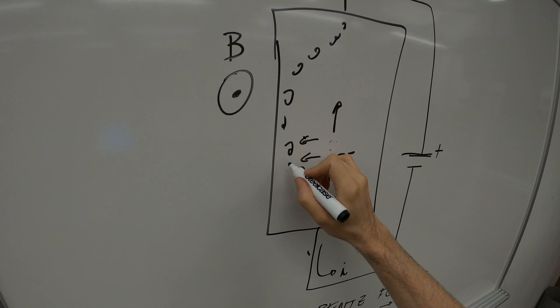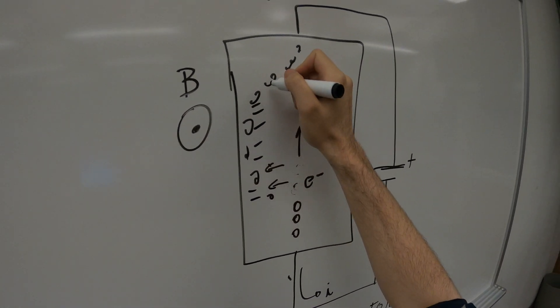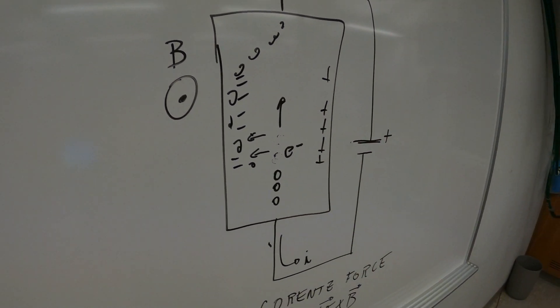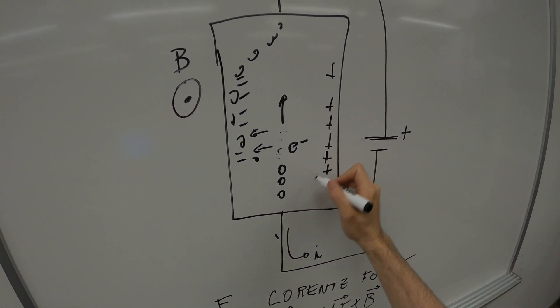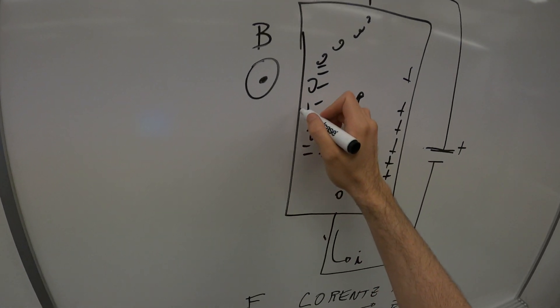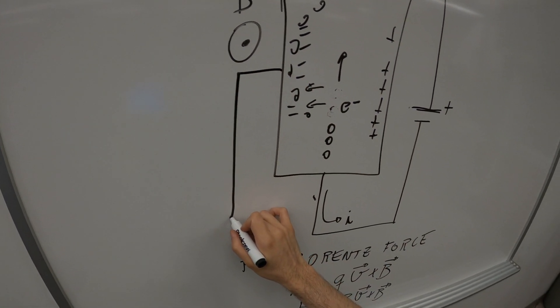So this will be negatively charged, and here you have a positive charge distribution. And that will create a voltage between these two terminals.